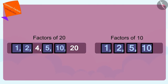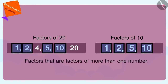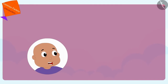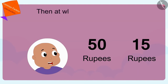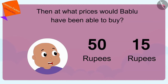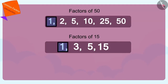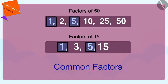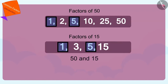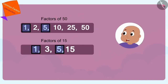And kids, do you know that factors that are factors of more than one number are called common factors of those numbers? If Bablu had fifty and fifteen rupees, then at what prices would Bablu have been able to buy? If you want, you can pause the video and find the answer. One and five are the common factors of fifty and fifteen. So, Bablu would have been able to buy ice creams for one or five rupees.